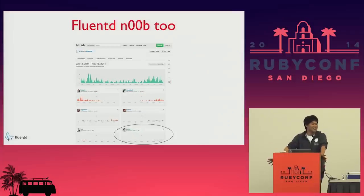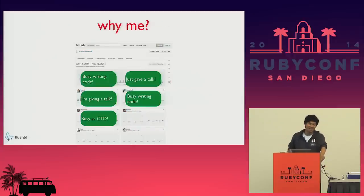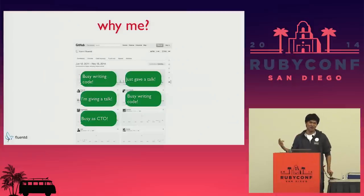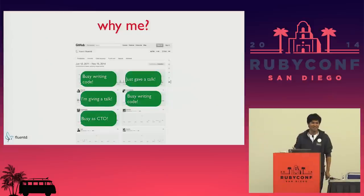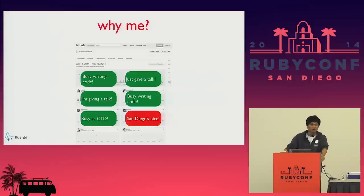The natural question to ask is: why is the sixth person giving a talk and not the other five who clearly did more work? Well, I asked them and they had all these excuses. The guy to my right is my boss, who is CTO — he's actually busy, unlike me. I was like, San Diego sounds really cool. I come from this really expensive city with a lot of rain called San Francisco, and it's my first time here — and also my first RubyConf.